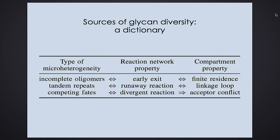The way to prevent early exit is simply to have a long enough residence time. Runaway reactions mean you have collections of enzymes acting in a cycle. Divergent reactions mean you have type one or type two conflicts. These are essentially equivalence conditions — necessary and sufficient. This dictionary applies to literally any class of these Markov chains based on any kind of enzyme specificity, for any set of reaction rates and specificities — it applies to every single simulation anyone has ever done about these systems.